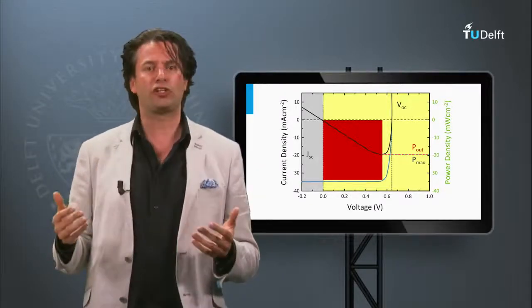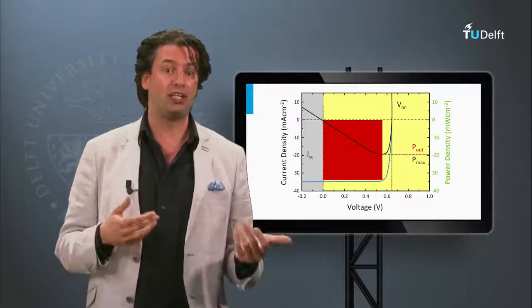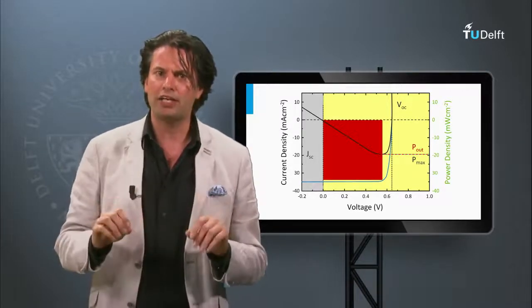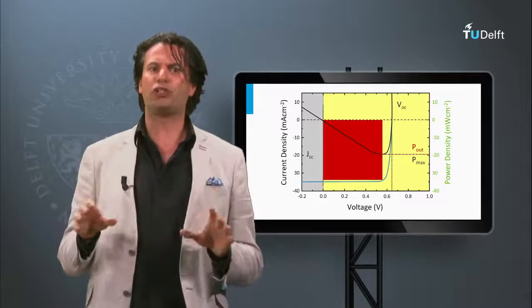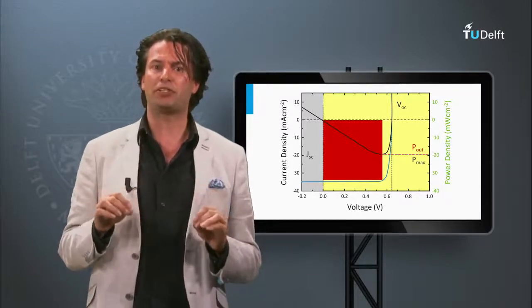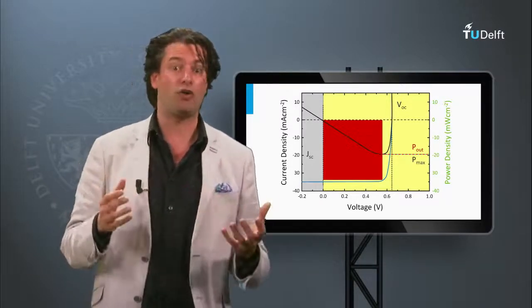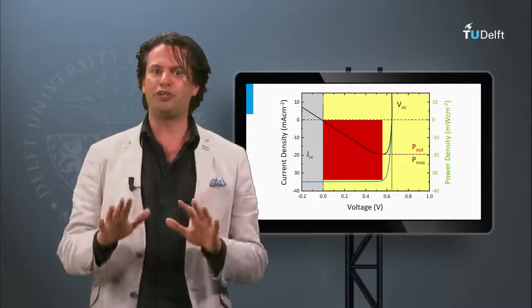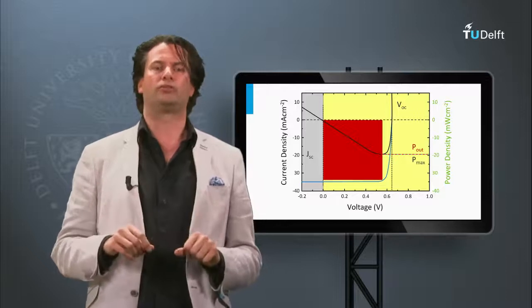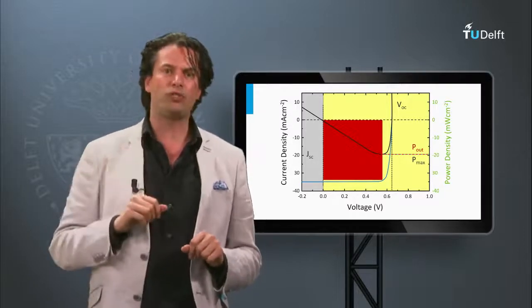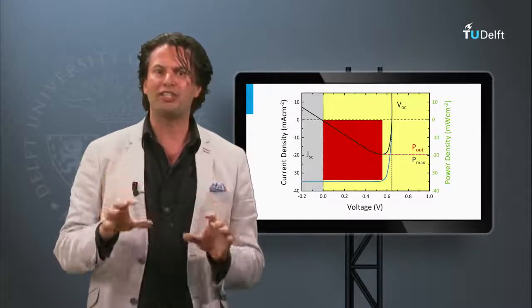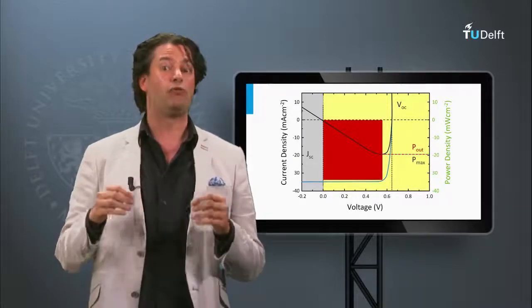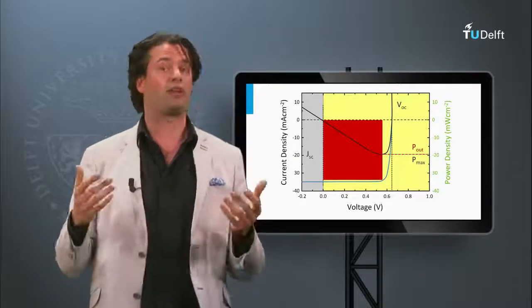So far we have discussed the external parameters of an ideal and non-ideal solar cell this week. The remainder of this week we will discuss how these external parameters are affected by the design of the solar cell, introducing general design rules for solar cells. These design rules will help you to understand the performance of the different PV technologies which will be discussed in the coming three weeks.